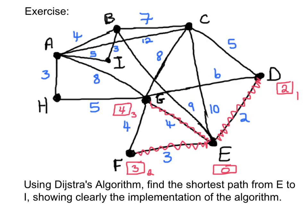Still not having arrived at I, the algorithm repeats again. From E it can go to B at 9 and C at 10. From D→C the distance is 7. Searching out from G, G→C has a combined weight of 12, G→A has a combined weight of 12, and G→H has a combined weight of 9. The algorithm chooses the shortest of these, which is D→C at 7. D→C has a combined weight of 7, and that's my fourth destination point in this search.